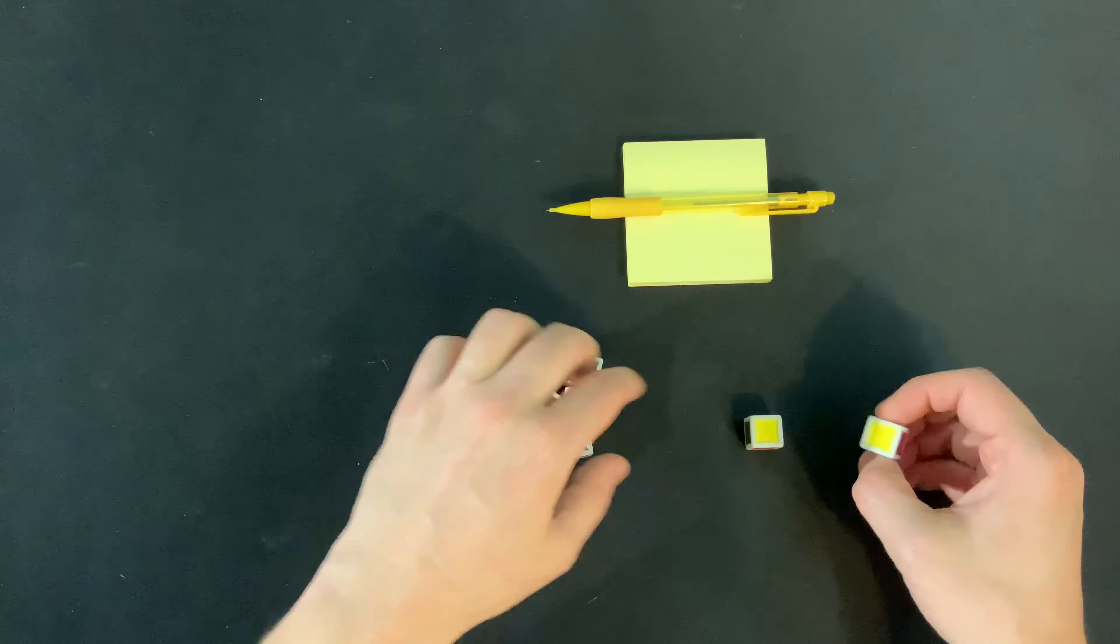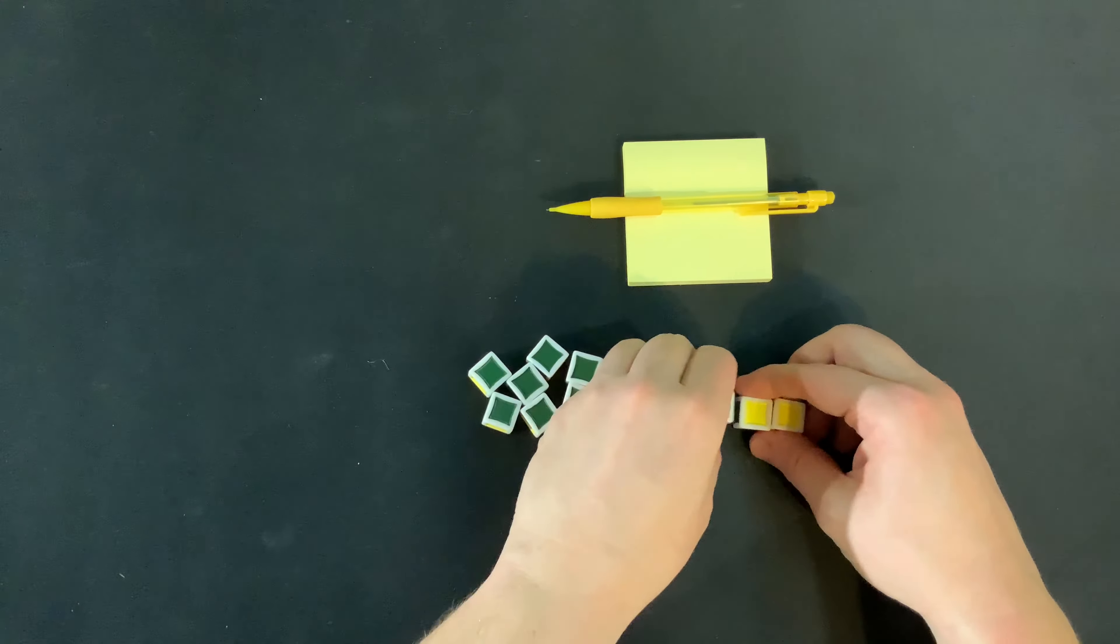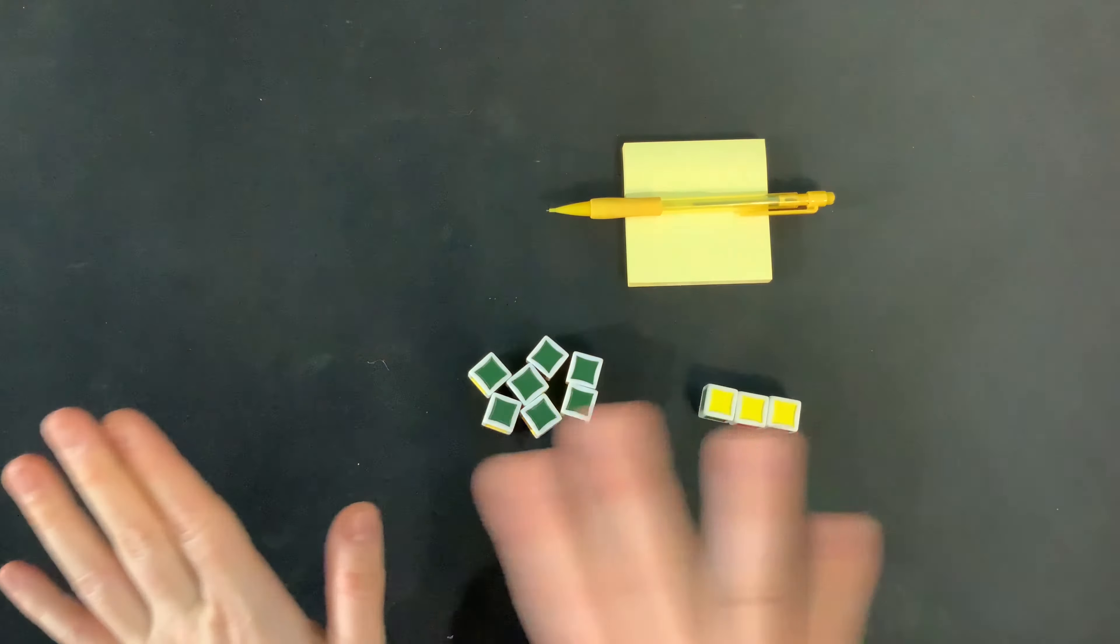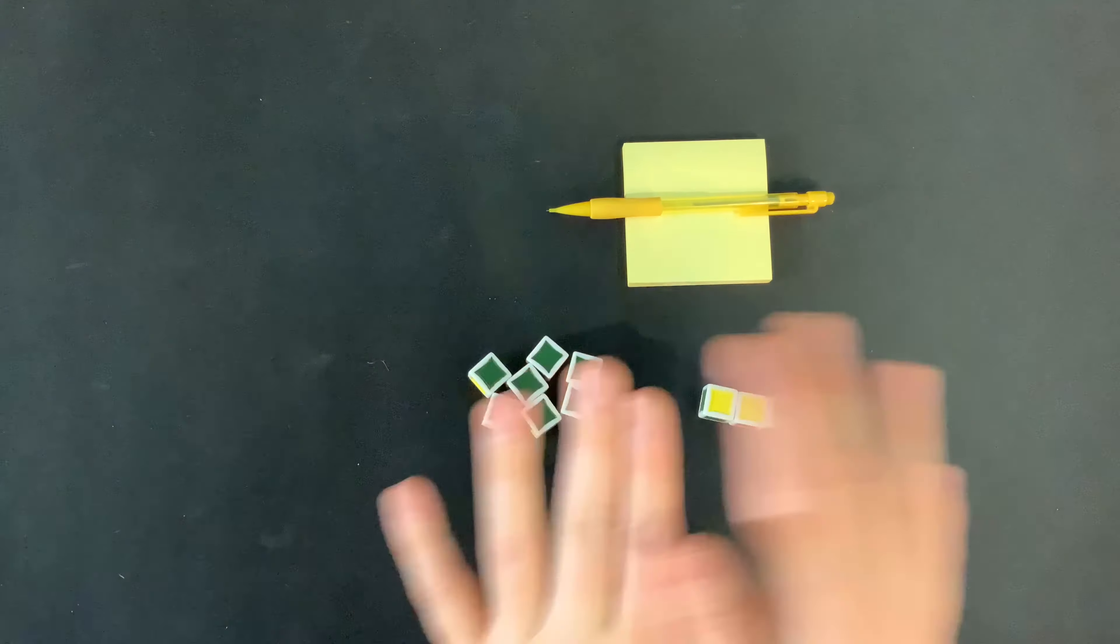Now, if you ever roll nothing but yellow, so let's say you have three dice left and you roll nothing but yellow, that means whoa, be cautious. You can either stop or continue to roll.